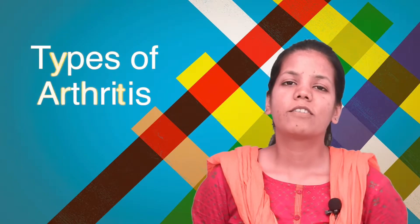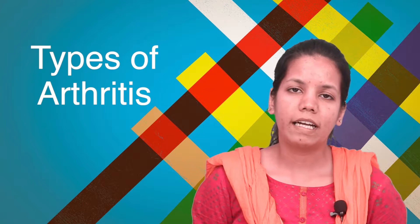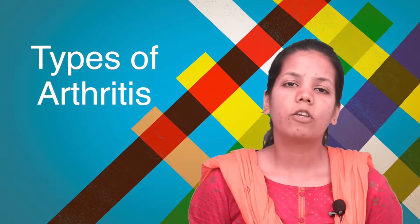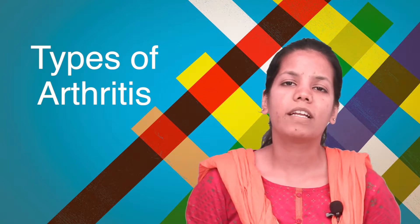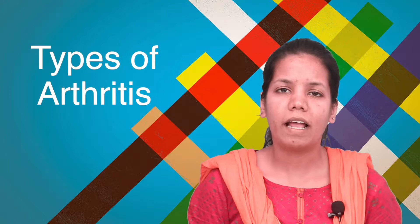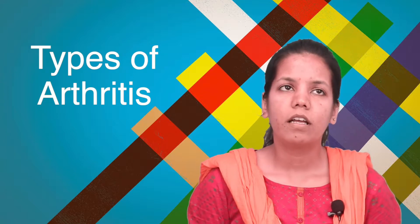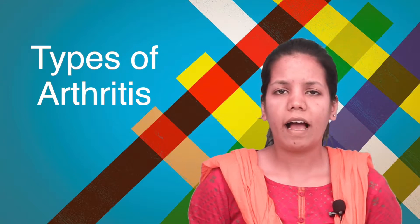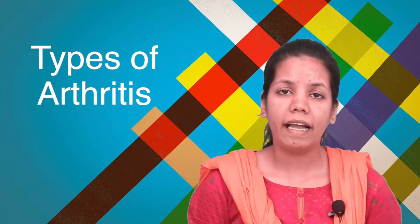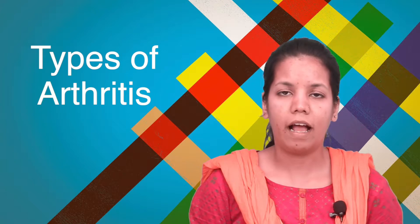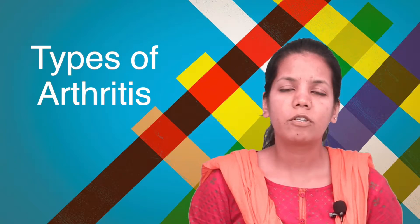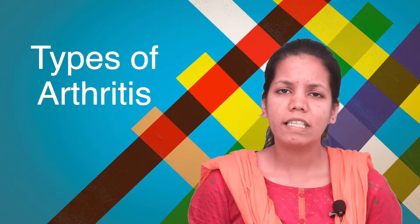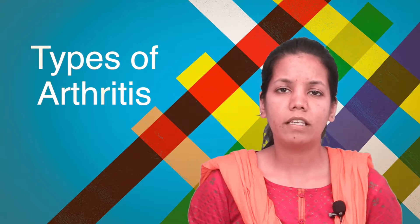Hello students, today we are studying the chapter on human skeleton, and in that we are studying the topic: types of arthritis. Now when I say arthritis, 'itis' means inflammation, and arthritis is the inflammation of your joints. So let's study today the different kinds of arthritis.